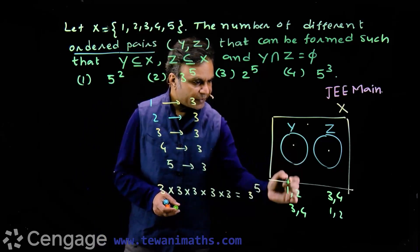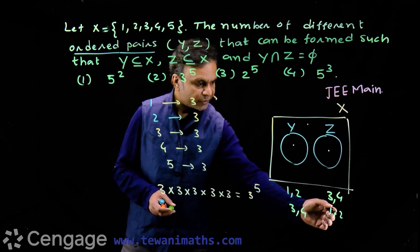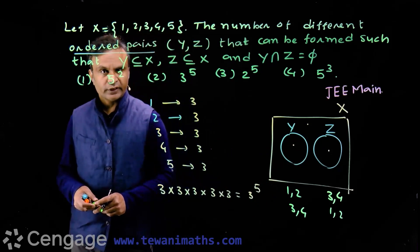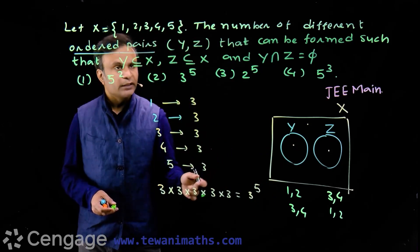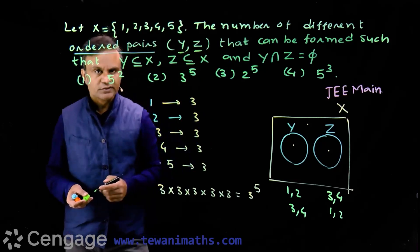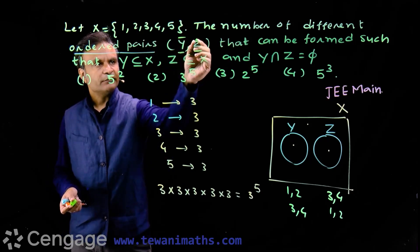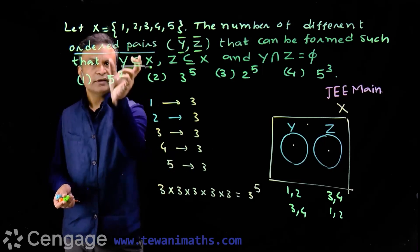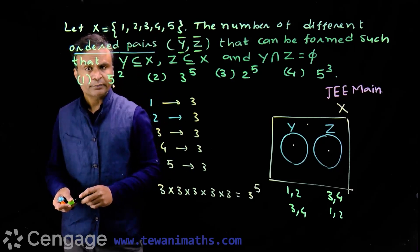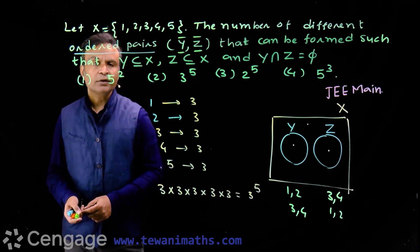For example, consider the case where elements 1 and 2 are in set Y and elements 3 and 4 are in set Z. Now consider the case where elements 3 and 4 are in set Y and elements 1 and 2 are in set Z. These two cases are different because we are finding ordered pairs — it matters which elements go into the first set versus the second set. So the answer is 3⁵.